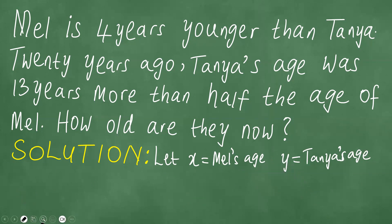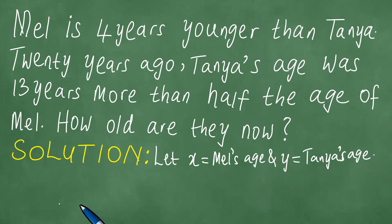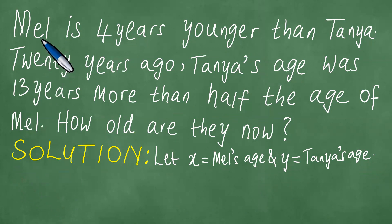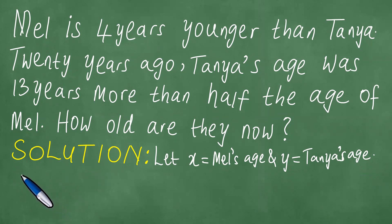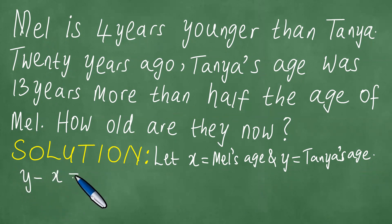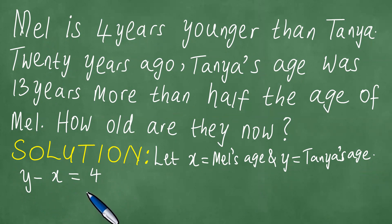We proceed to solve this problem. Mel is 4 years younger than Tanya, meaning Mel's age is smaller. So we take Tanya's age minus Mel's age, and the difference is exactly 4 years.